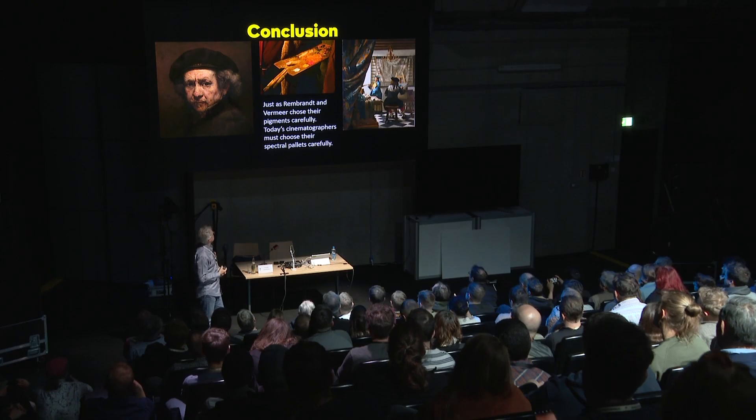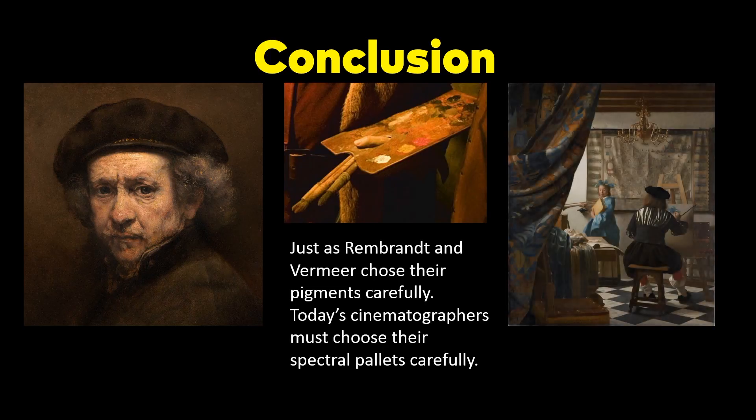Just as Rembrandt and Vermeer chose their pigments carefully, today's cinematographers have to choose their spectral palettes just as carefully. Rembrandt worked with like seven pigments and was very particular — you can identify him just by analyzing the pigments. In Amsterdam at that time, there were a lot of people making pigment, but these artists were so honed in that they knew what they could rely on, and they didn't just nilly-willy mix things together.